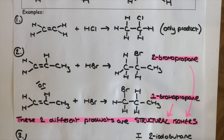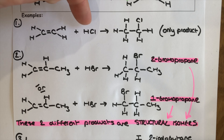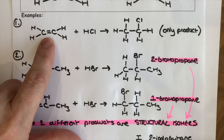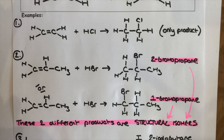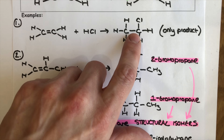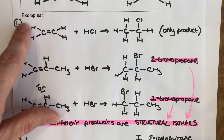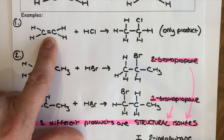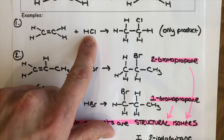Our first example is the most straightforward: ethene reacting with hydrogen chloride. Ethene is a symmetrical alkene, and whenever our alkene is symmetrical we won't have to worry about where the H goes or where the Cl goes, because the product will only be the same thing but flipped over. So if our alkene is symmetrical, we don't need to worry about where each of the two atoms from our electrophile ends up.